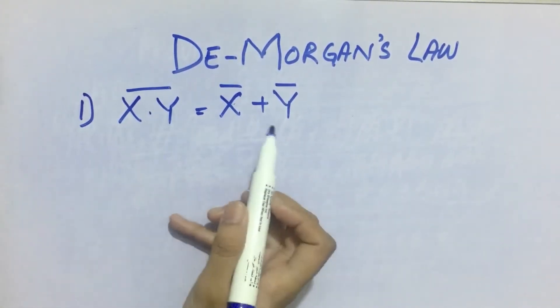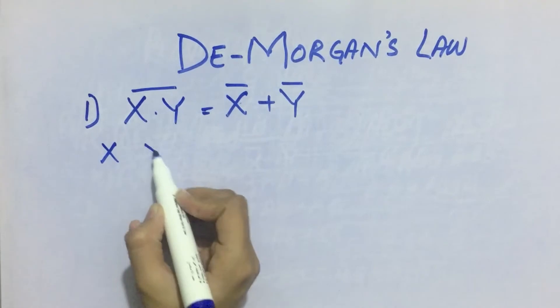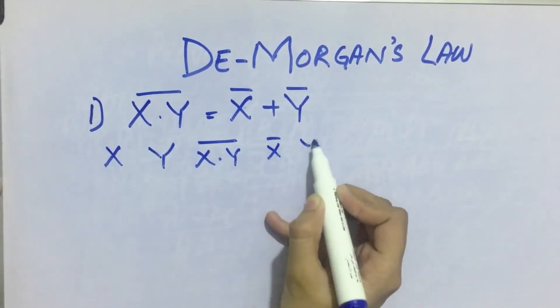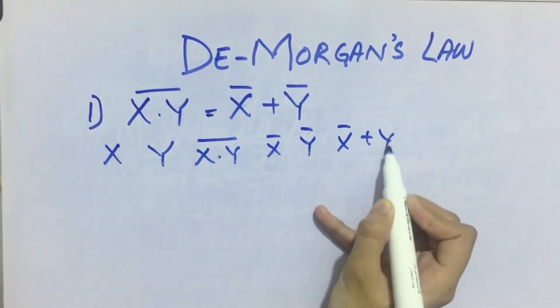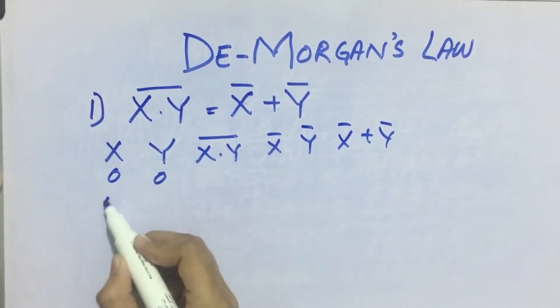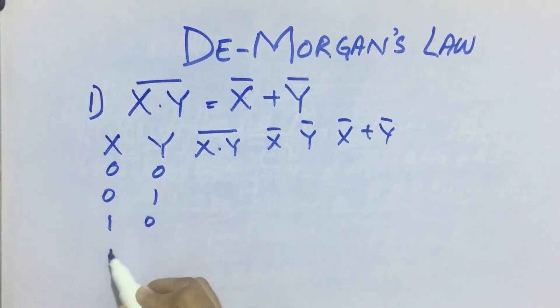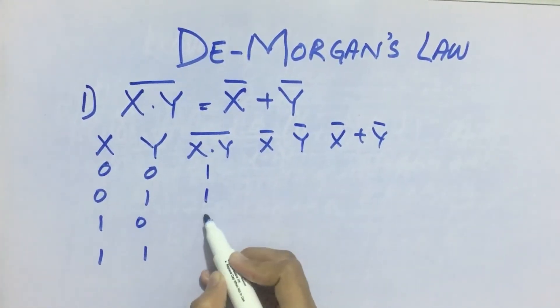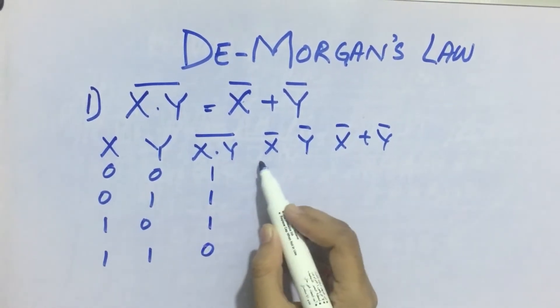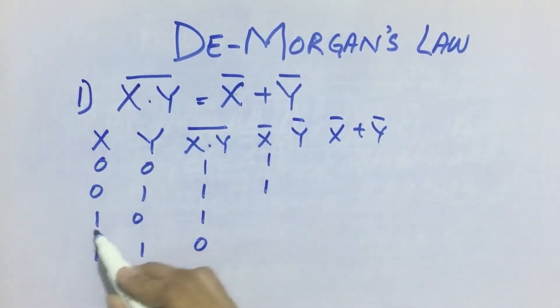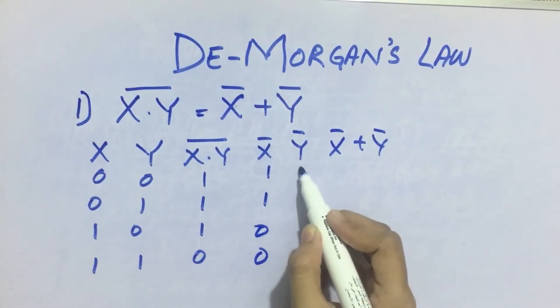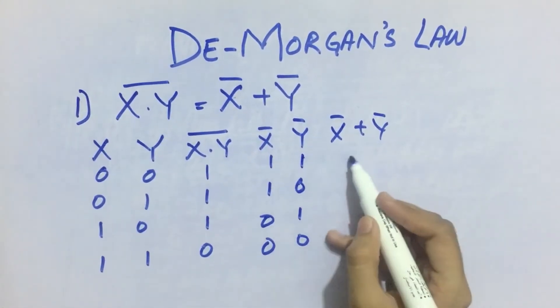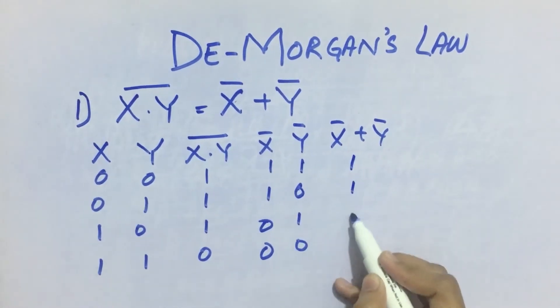Now we will prove this law using the truth table. This is x, y, x into y whole bar. Then we have x bar, y bar, x bar plus y bar. So 0, 0, 0, 1, 1, 0 and 1, 1. So x into y whole bar will give 1, 1, 1 and 0. Whereas x bar will give 1, 1, 0, 0. Y bar will give 1, 0, 1, 0. And the addition of both will give 1, 1, 1, 0.